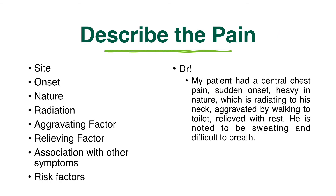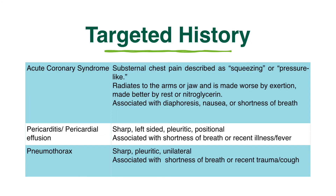It's important to obtain a clear history of the onset and evolution of chest pain, with particular attention to details such as the location, quality, duration, and aggravating or alleviating factors. Classical angina presents with substernal chest pain that is often described as squeezing or pressure-like. It often radiates to the arms or jaw and is made worse by exertion or made better by rest or nitroglycerin. It may be associated with diaphoresis, nausea, or shortness of breath.